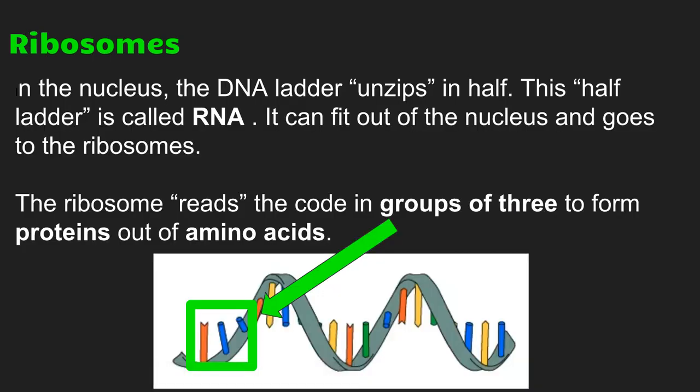In that video, we were able to see how the nucleus and the ribosomes work together to get their jobs done. In the nucleus, the DNA ladder unzips in half. This partial half-ladder is called RNA — remember, there's no deoxyribo, it's just ribonucleic acid. And it's able to fit out of the nucleus and go to the ribosomes. The ribosome then reads the code in groups of three in order to form the proteins. The whole reason the ribosomes can do their job is because of what's going on inside of the nucleus.